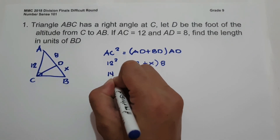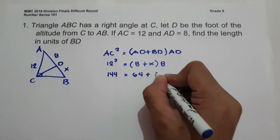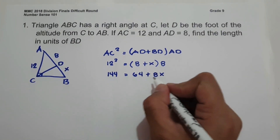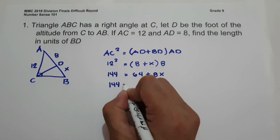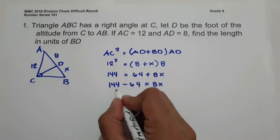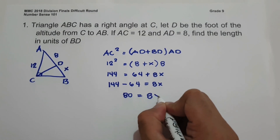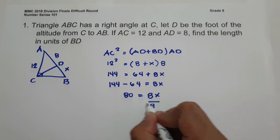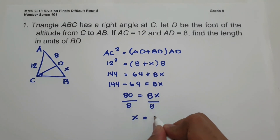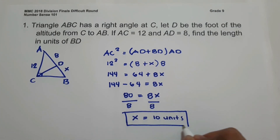12 squared is 144. Then 8 × 8 is 64 and 8 × X is 8X. Moving 64 to the other side: 144 − 64 = 8X, so 80 = 8X. Dividing both sides by 8, X equals 10 units. So BD equals 10 units.